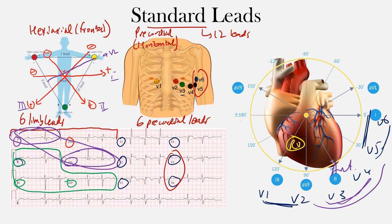When you combine the hexaxial system and the precordial system, you get a 3D image — and that's where you get the standard 12-lead EKG, giving you a great 3D image of the heart's electrical activity. You have the six precordial leads and the six limb leads making that up. To recap, the standard 12-lead EKG, as the name implies, is a 10-second strip — from beginning to end, 10 seconds.